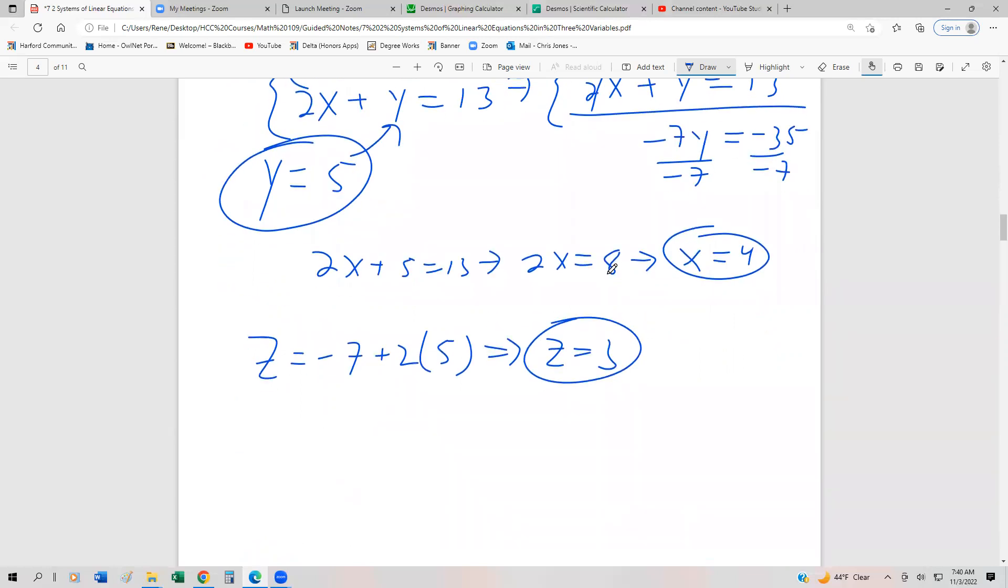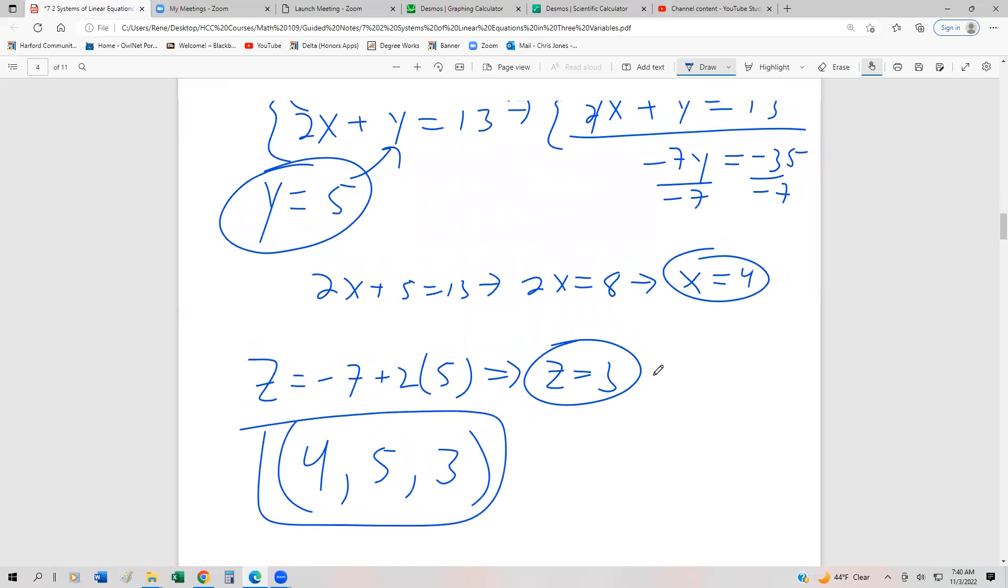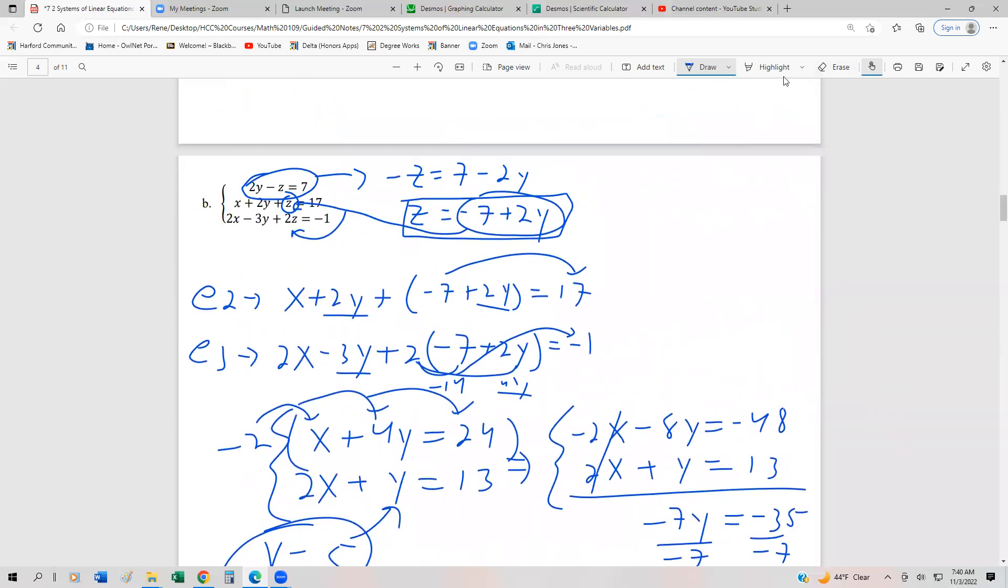And so our ordered triple is going to be x is 4, y is 5, z is 3. Now, let's just make sure that this answer makes sense, especially with three equations and three variables. I'm just going to pick one of the equations at random. So I'm going to pick this last equation and check to make sure that our solution satisfies that equation.